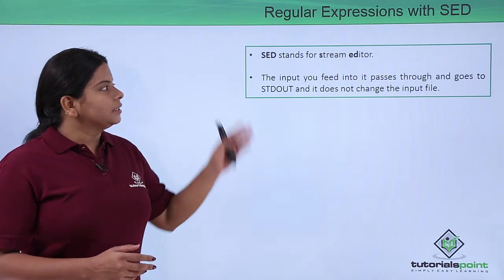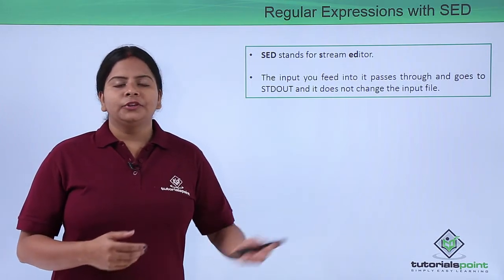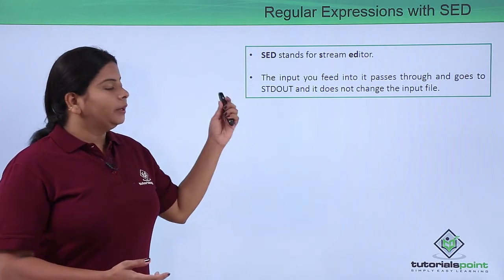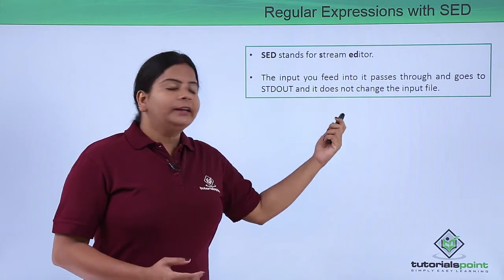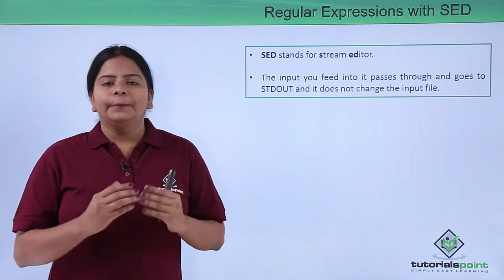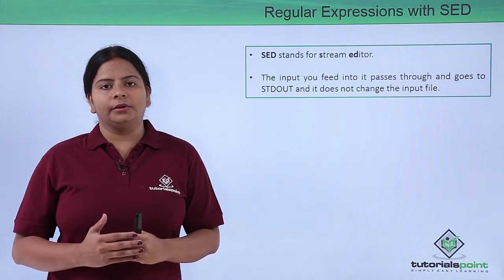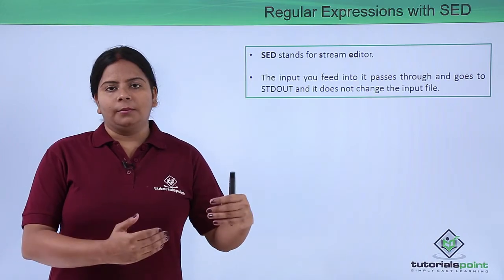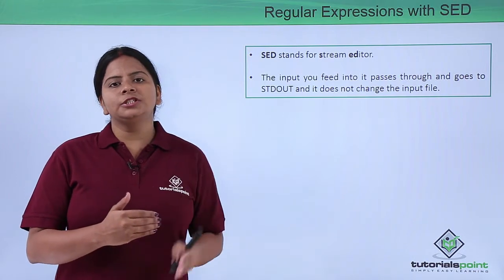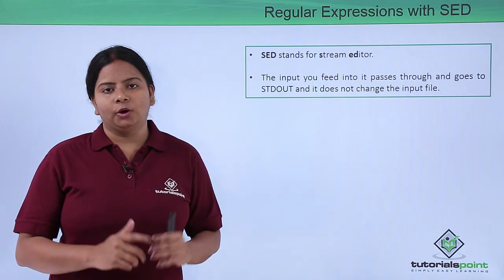One command we generally use is sed, which is called a stream editor. You already have your stdin and stdout files, which we have discussed in standard files. What we do is feed the input which passes through to your stdout file without changing your stdin file. For example, if I have a list of numbers from 1 to 10 but I just want to see numbers less than 5, the command won't change the original file — only the output will show 1 to 5.